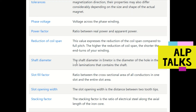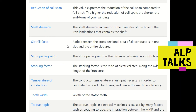Shaft diameter is the diameter of the hole in the iron laminations that contains the shaft. Slot fill factor is the ratio between the cross-sectional area of all conductors in one slot and the entire slot area. Slot opening width is the distance between two adjacent tooth tips.